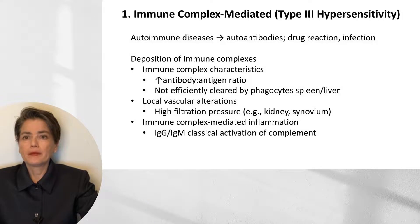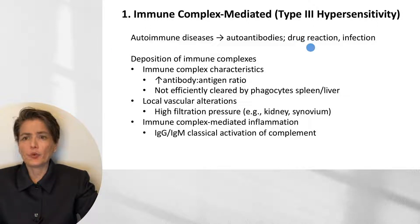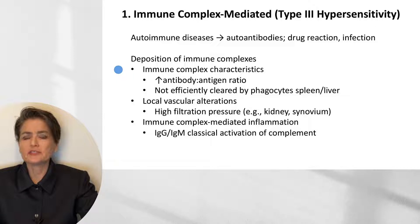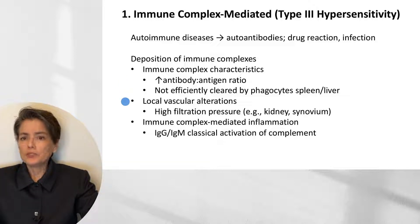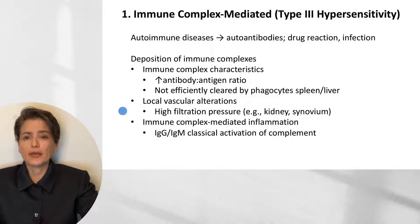Let's begin with immune complex deposition, which is type 3 hypersensitivity. We can get these immune complexes from autoantibodies in the context of an autoimmune disease, or because of a drug reaction or infection. The deposition of immune complexes depends on immune complex characteristics as well as local vascular conditions. When we have an increased ratio of antibody to antigen, these complexes tend to precipitate and are not efficiently cleared by phagocytes in the spleen and liver, leading to their deposition in blood vessels and glomeruli. Where we have high filtration pressure — for example, in the kidney or synovium — these are classic locations for immune complex deposition.